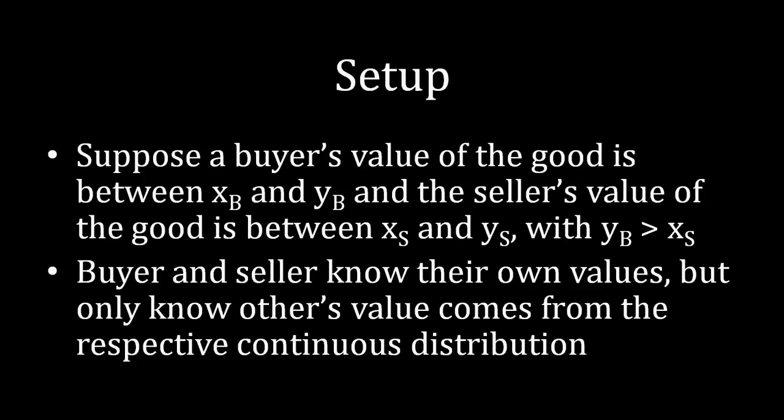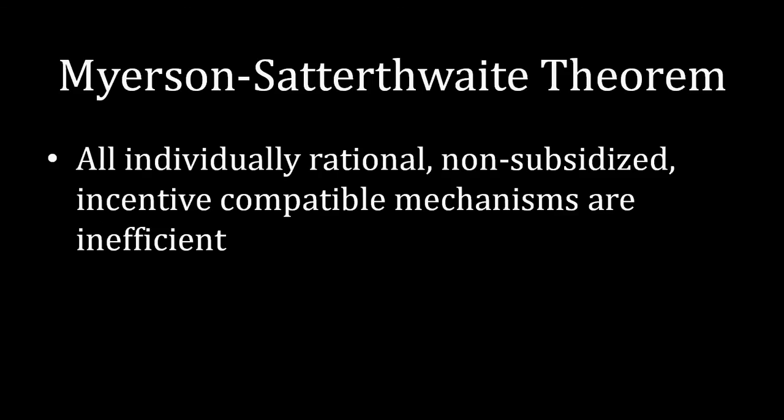That's the setup — really not much of a setup at all. I never said how exactly we're negotiating; I didn't say this is an ultimatum game or alternating offers. All we care about is this informational structure. And with just that informational structure, we have the Meyerson-Satterthwaite Theorem, which says something really deep about bargaining with incomplete information: all individually rational, non-subsidized, incentive-compatible mechanisms are inefficient.